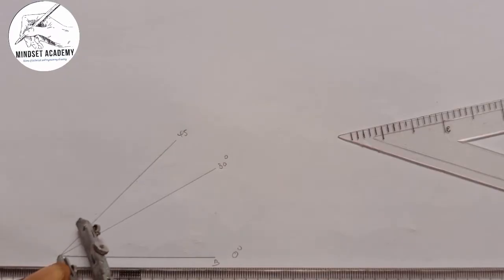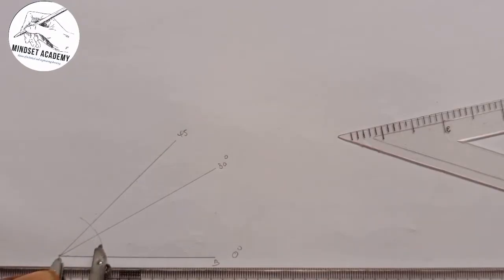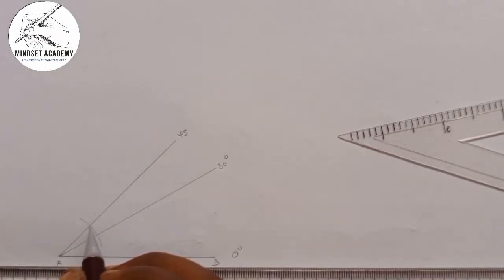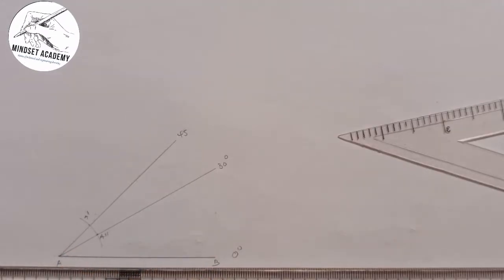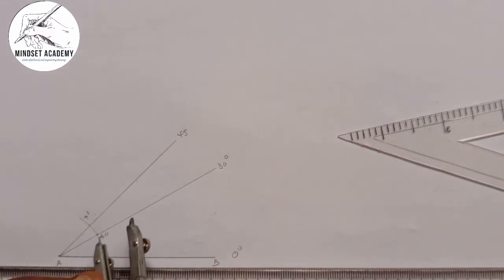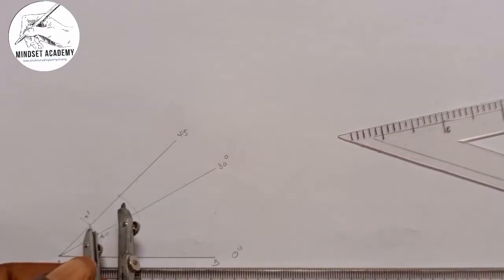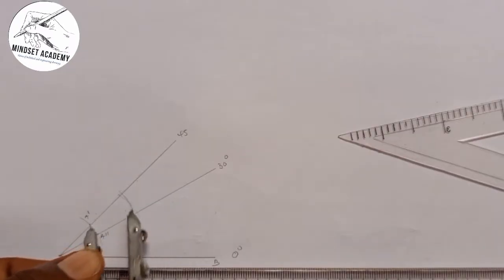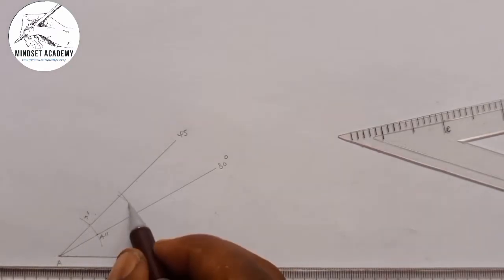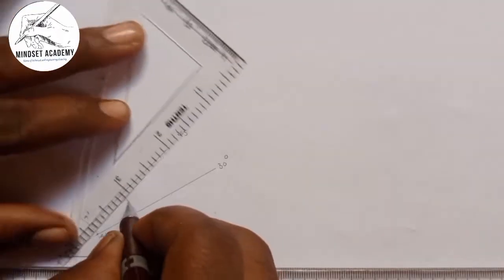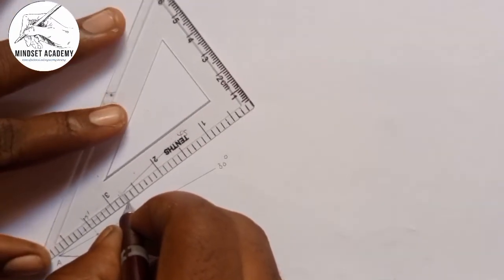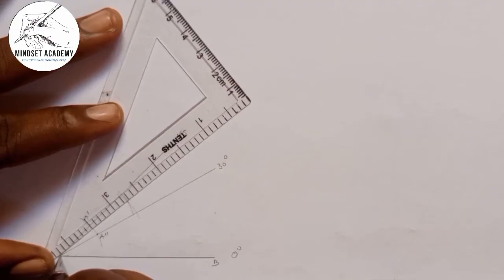I'll draw an arc that cuts my 45-degree line — I'll call that point A prime — and cuts my 30-degree line — I'll call that point A double-prime. To bisect, place the compass at A double-prime and strike an arc; place it at A prime and strike another arc. Where they meet is 7.5 degrees. And 7.5 plus 30 gives you 37.5 degrees.